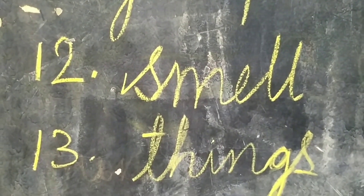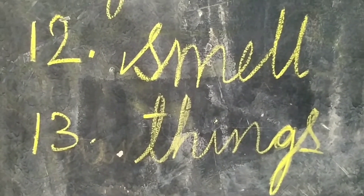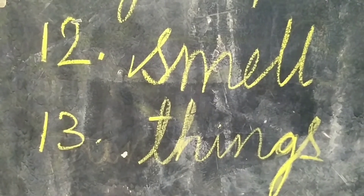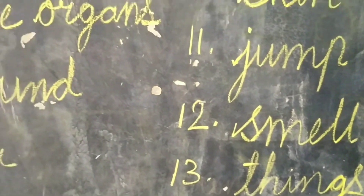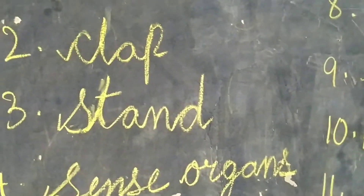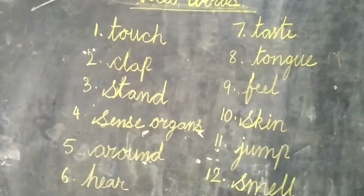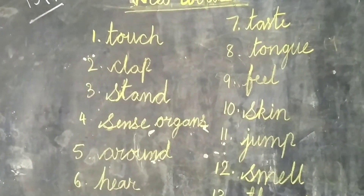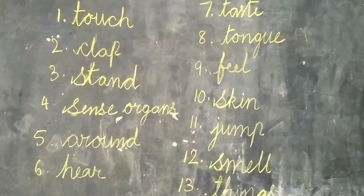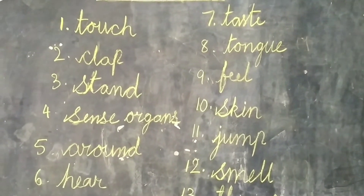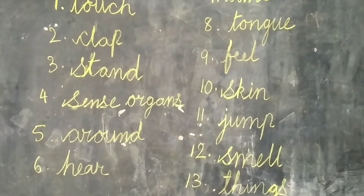Thirteenth one: T-H-I-N-G-S. Things. Children, these are the 13 new words in lesson number one. Everyone write and learn the spellings. Tomorrow I am going to ask you some spellings, children.